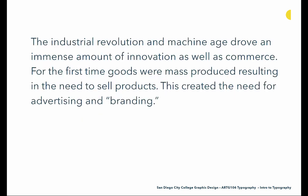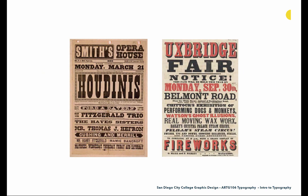The industrial revolution and machine age drove an immense amount of innovation as well as commerce. For the first time, goods were mass-produced, resulting in the need to sell products — creating the need for advertising and branding, which really changed typography. Up until this point, type had been used for books and small publications, but now there was a need for typography to sell. We start seeing slab serifs, shaded letter forms, and Victorian-era settings where many different typefaces are mixed together — really coming from a need to yell and get someone's attention.